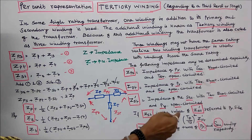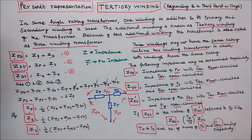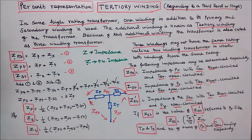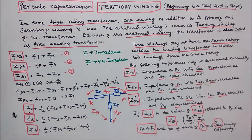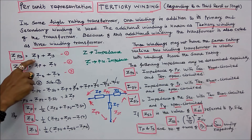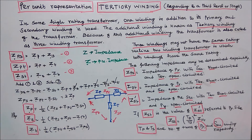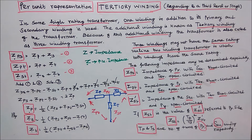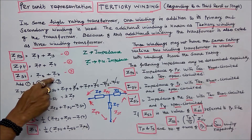If Zst is the value of Zst dash referred to the primary side, then Zst equals (Tp/Ts) squared times Zst dash, where Tp and Ts are the number of turns of primary and secondary winding respectively. These are per unit impedances. So: per unit impedance Zps equals per unit impedance of primary plus per unit impedance of secondary. Per unit impedance Zpt equals per unit impedance of primary plus per unit impedance of tertiary winding. Per unit impedance Zst equals per unit impedance of secondary plus per unit impedance of tertiary winding.